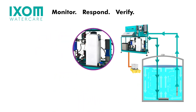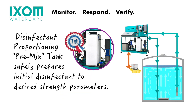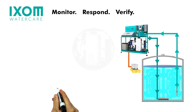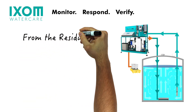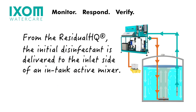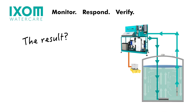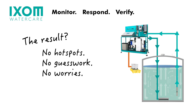The Residual HQ utilizes an industry-first disinfectant proportioning tank to safely prepare initial disinfectant — be it chlorine or chloramine — to desired strength parameters. From there, the initial disinfectant is delivered directly into the inlet side of a sheet flow mixer for further mixing and dilution. On the outlet side, the final disinfectant is thoroughly mixed into the tank water column. The result? No hot spots, no guesswork, and no worries.